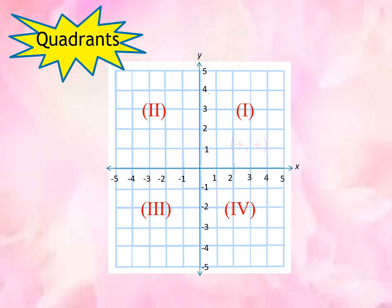In Quadrant 1, both the x-coordinate and the y-coordinate are positive. For the second quadrant, the x-coordinate is negative and the y-coordinate is positive. While in the third quadrant, both the x and y-coordinates are negative. And in the fourth quadrant, the x-coordinate is positive while the y-coordinate is negative.